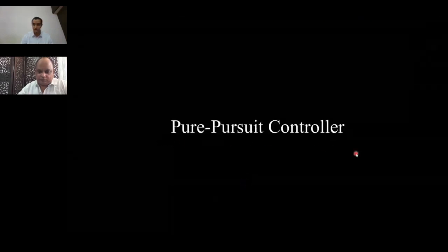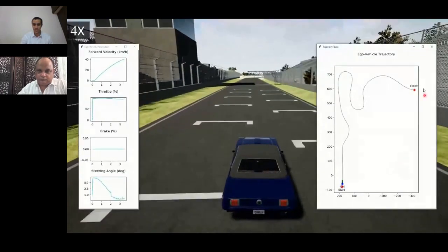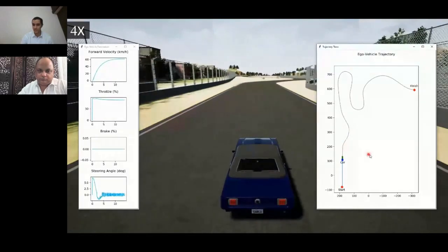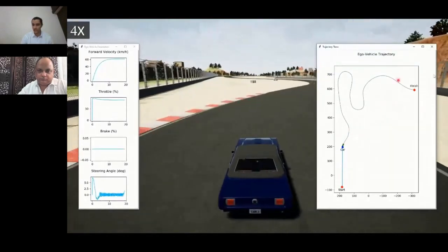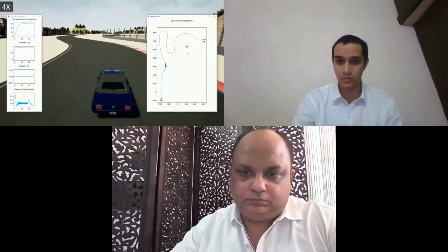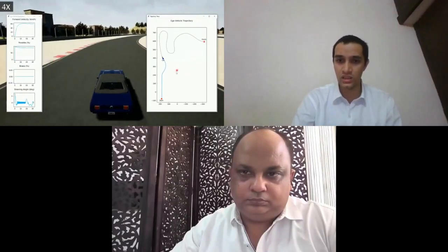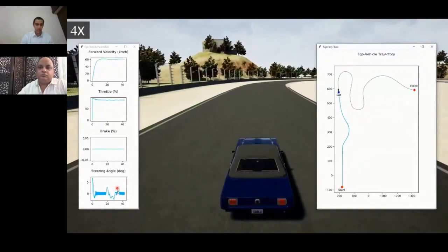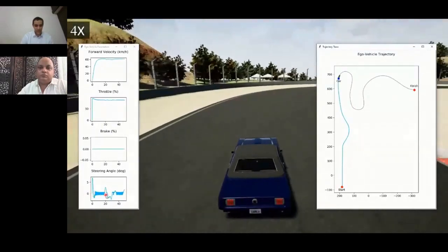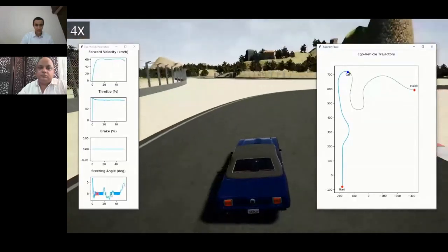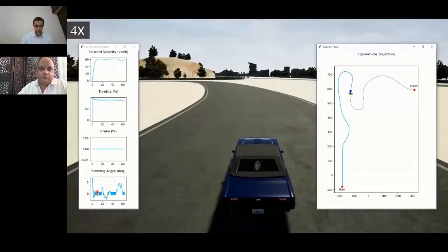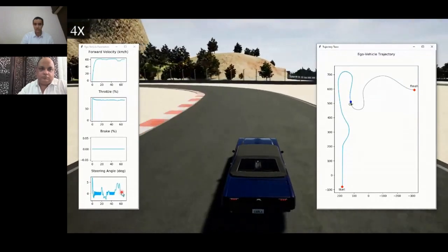Coming to the pure pursuit control algorithm, if you recall, I stated that the drawback of this method is during the end phases, wherein the lookahead point suddenly vanishes. To avoid that kind of instability, we actually kept feeding the last waypoint to the controller. However, obviously that is not the best solution. Another thing to note here is that when the control command is in the neighborhood of 0, the controller is providing a fluctuating control command for the vehicle.